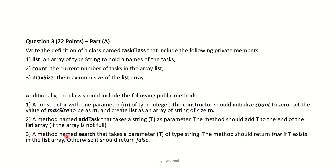The last method is named search. It will also take a parameter t of type String. The method should return true if t exists in the list, otherwise it should return false. So we will take t as a string and do a search in the array — if it is found return true, otherwise return false.